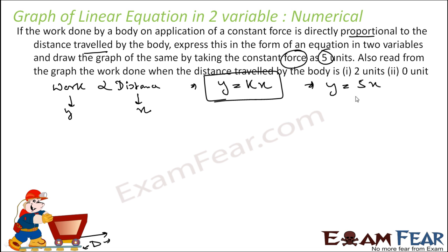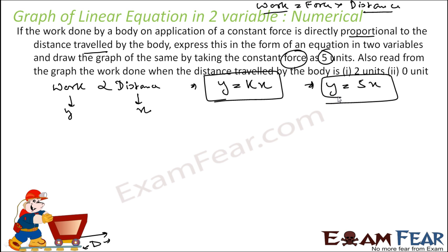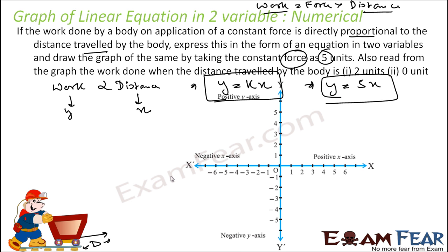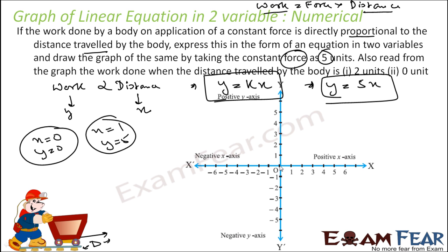So y is equal to 5x. Note that in the earlier example the constant was not given and we assumed it to be 5, but here the constant value is given as 5. The actual formula in physics is: work equals force into distance. So y equal to 5x is our equation and we need to plot this. Taking x equal to 0 gives y equal to 0, and taking x equal to 1 gives y equal to 5. So with these two points (0, 0) and (1, 5), we can draw a straight line.